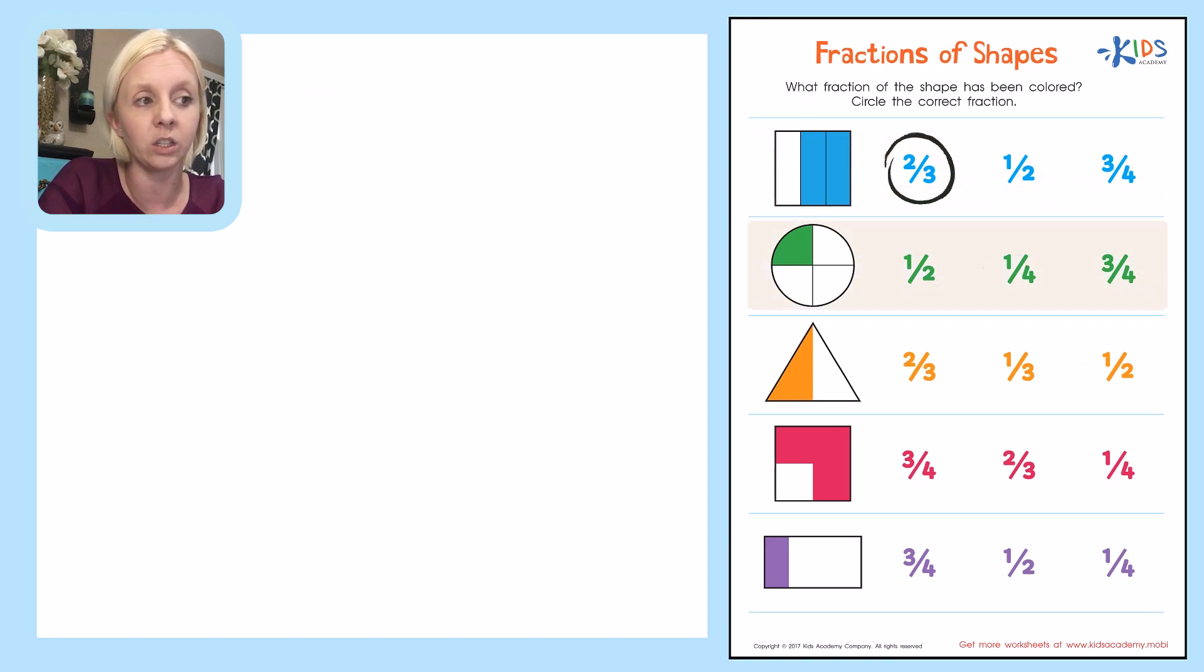The next one is the circle. And the circle, we can already tell how many parts it's divided up in because they've drawn the line out for us. So we have one, two, three, four. So whatever the answer is going to be is either going to have a four at the bottom. So over here, it says one out of four or three out of four. And we're trying to find how many of them have been colored. So we can see that only one of them over here has been colored. So I'm going to go ahead and circle that one right over here. One fourth. Very good.